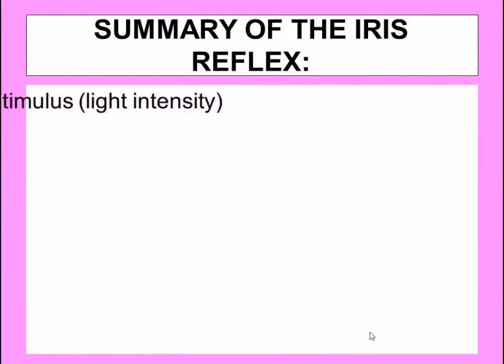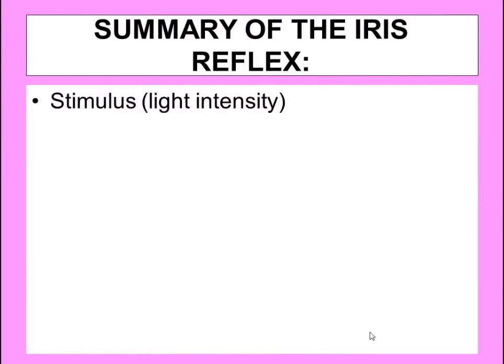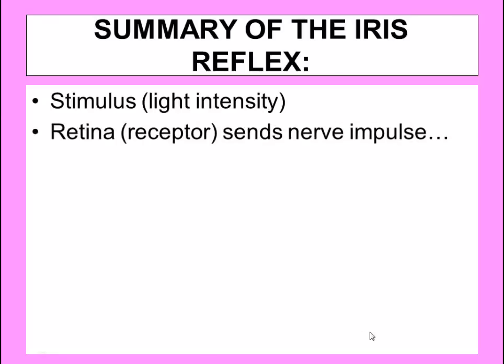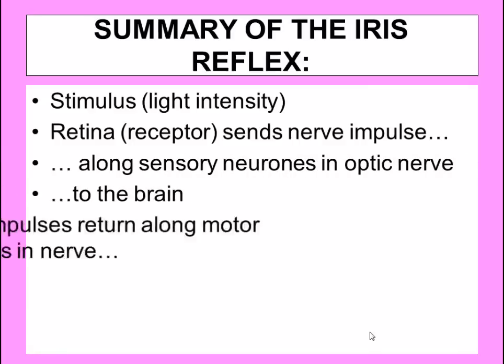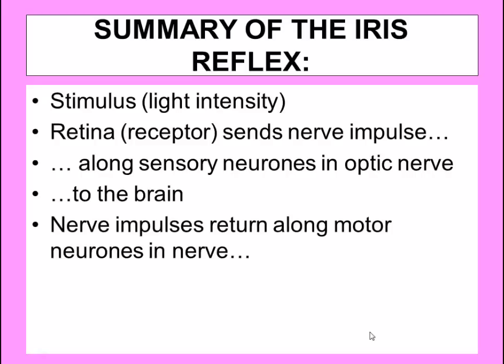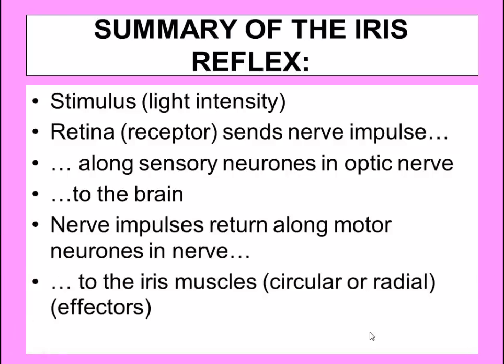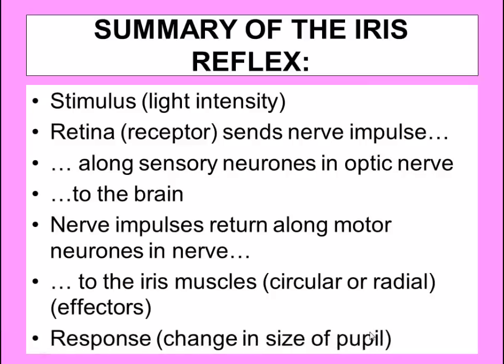In summary of the iris reflex: the stimulus is the light intensity. You will need to describe the iris reflex in terms of both bright light and dim light. The retina is our receptor and sends nerve impulses — electrical impulses — along sensory neurons in the optic nerve to the brain. Nerve impulses then return along motor neurons in the optic nerve to the iris muscles, either circular or radial, changing the size of the pupil — dilating it or constricting it. Thank you.